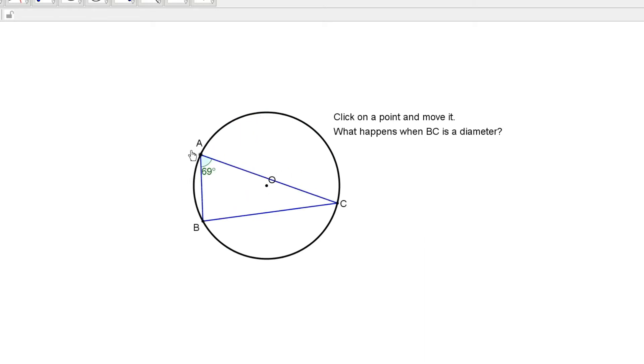I'll change it again. Suppose I move these things around. Now, I want to move until BC is the diameter. And again, you can see that the angle of the circumference is 90 degrees.